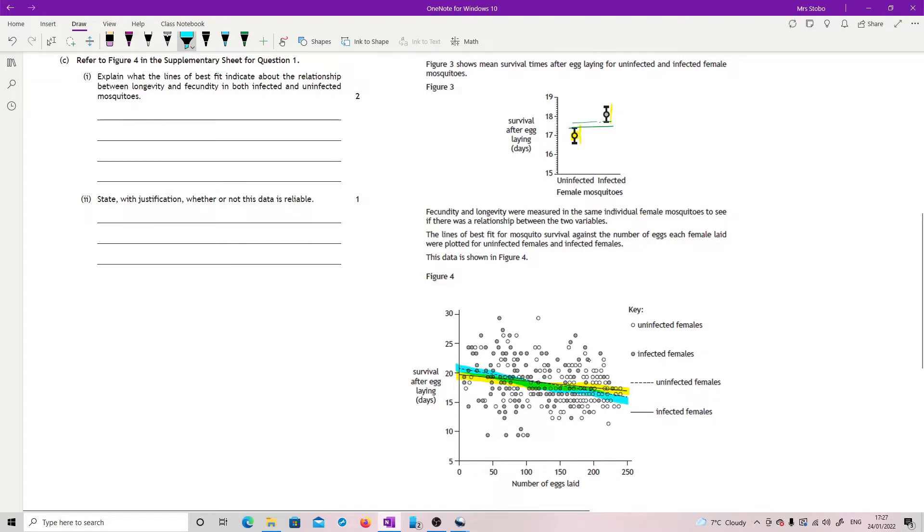So we're looking about for what relationship it has. What we've got is a negative correlation. Basically the survival and number of eggs drops. So as you increase your number of eggs laid you decrease the survival.